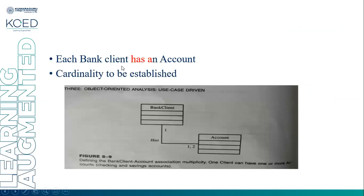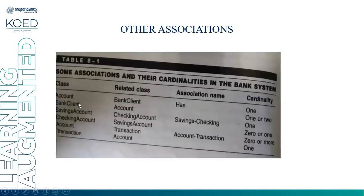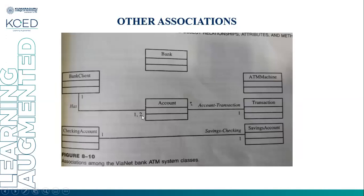Now we define the associations. Each bank client has an account; one client can have one or more accounts. A bank client can have one or two bank accounts. The saving account and checking account have a one-to-one relationship; a checking account should have zero or more saving accounts. An account has zero or more transactions; a transaction should contain one account. Bankline has one or more accounts; an account can have a minimum of one transaction; a transaction belongs to more than one account; one checking account should have one saving account. These are the associations among the YNET ATM system classes.